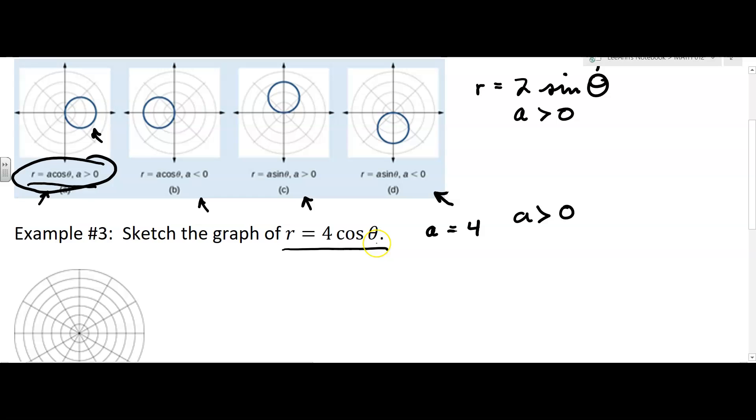I know cosine theta is 1 at 0, right? So if I'm thinking about a table of values, I can think about, well, if I put in 0 for cosine, that would give me 4 cosine 0, which would equal 4. And I can plot that point. Here's my polar axis. And then I'm going out 1, 2, 3, 4. I'm putting a point right there.